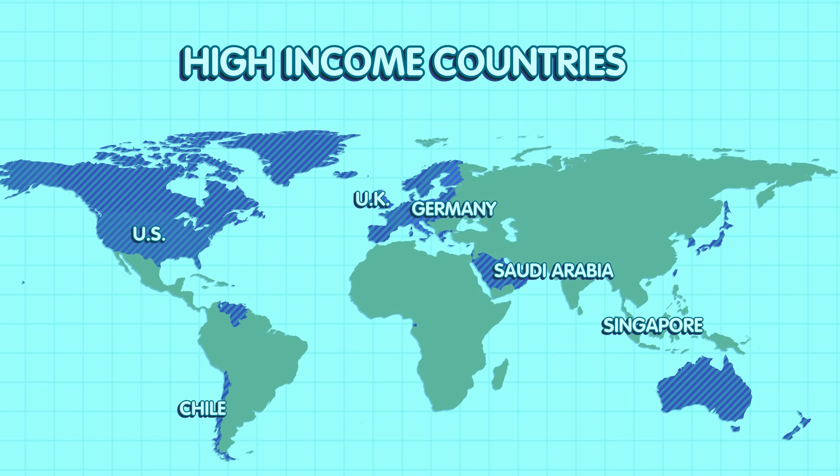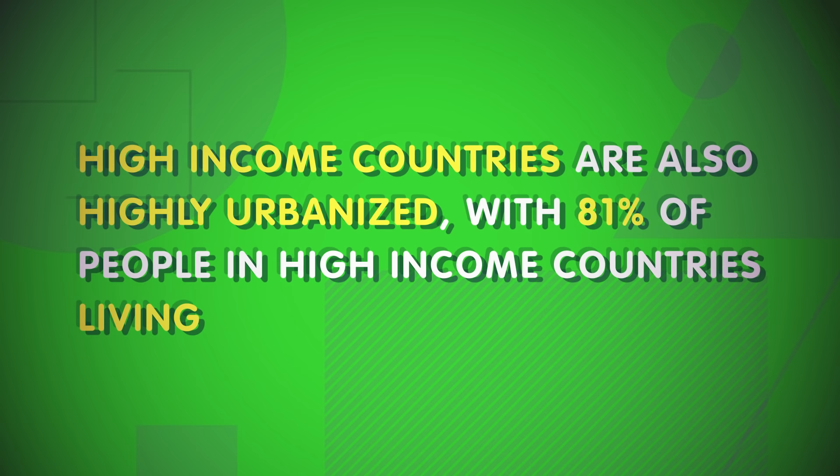Standards of living are higher in high-income countries than the rest of the world. High-income countries are also highly urbanized, with 81% of people living in or near cities. Much of the world's industry is centered in these countries, and with industry comes money and technology. For example, 60% of those in low-income countries have a cell phone, but in high-income countries, almost everyone does — for every 100 people, there are 124 cell phone plans.